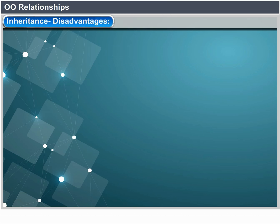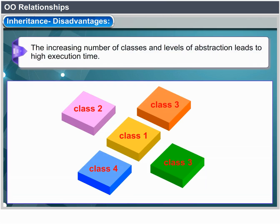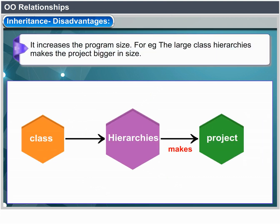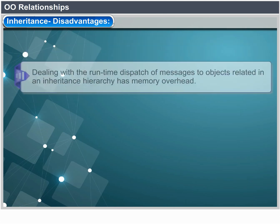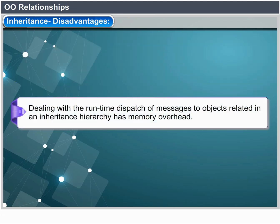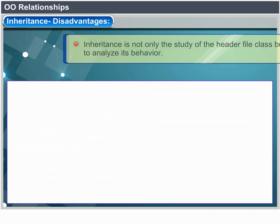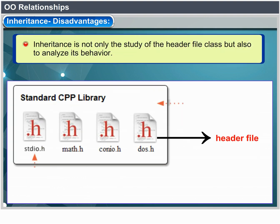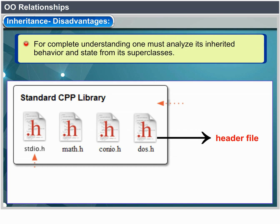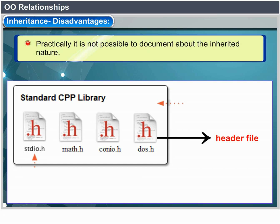Inheritance disadvantages include increased class abstraction coupling, increased program size from large class hierarchies, and dealing with runtime dispatch of messages in an inheritance hierarchy. There is also the yo-yo problem when understanding large systems, and documentation challenges — inheritance means it is not sufficient to study just the header file of a class to understand its behavior; you must also look up the hierarchy and consider inherited behavior and state from superclasses.